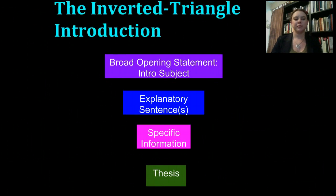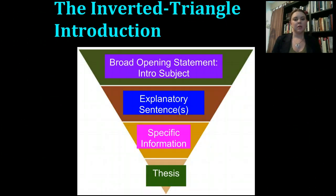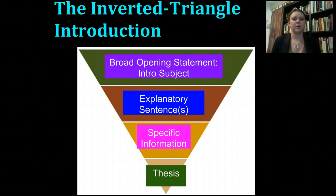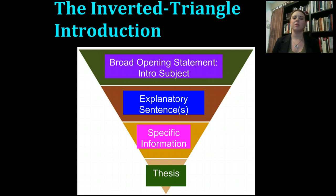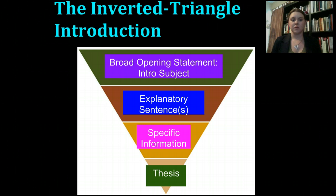So the first one: the inverted triangle. Basically, the inverted triangle — what you'll do is you'll go from very broad to narrow. This is important when we think about introduction writing because oftentimes we're just grabbing the audience's attention at the beginning and then we get to the very specific information towards the end. So what you're going to do is follow somewhat of a stepped process: a broad opening statement that usually introduces your subject, explanatory sentences or one sentence, give some specific information that helps project your organizational scheme, and then finally you'll give your thesis statement right at the end. The inverted triangle is probably the one that you're most familiar with as writers — it's taught often in schools.